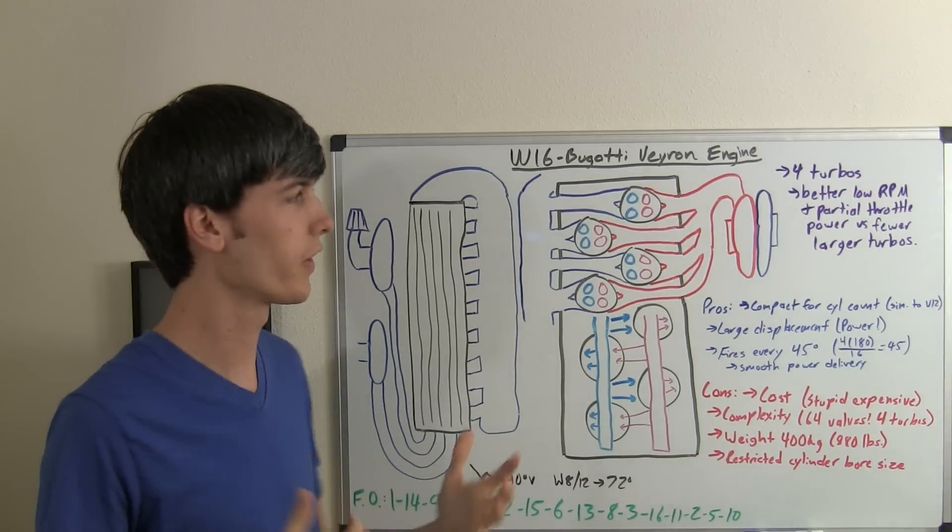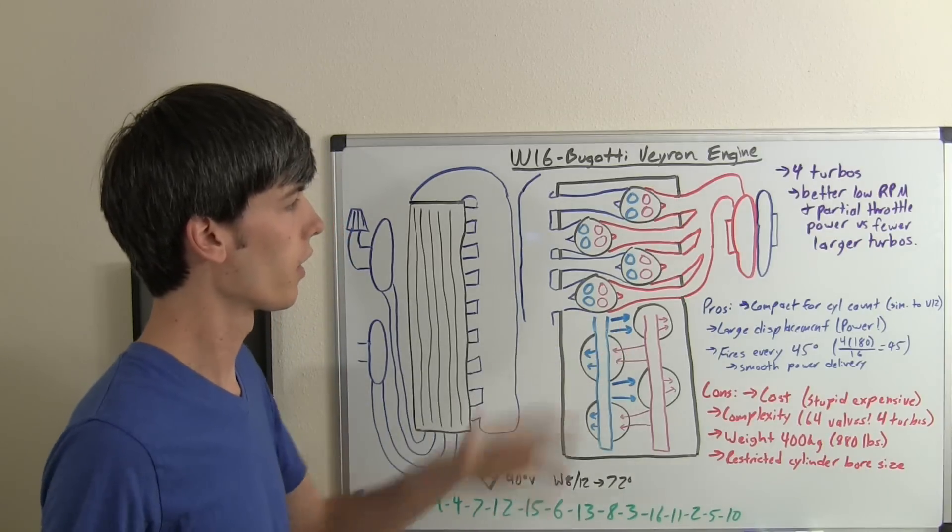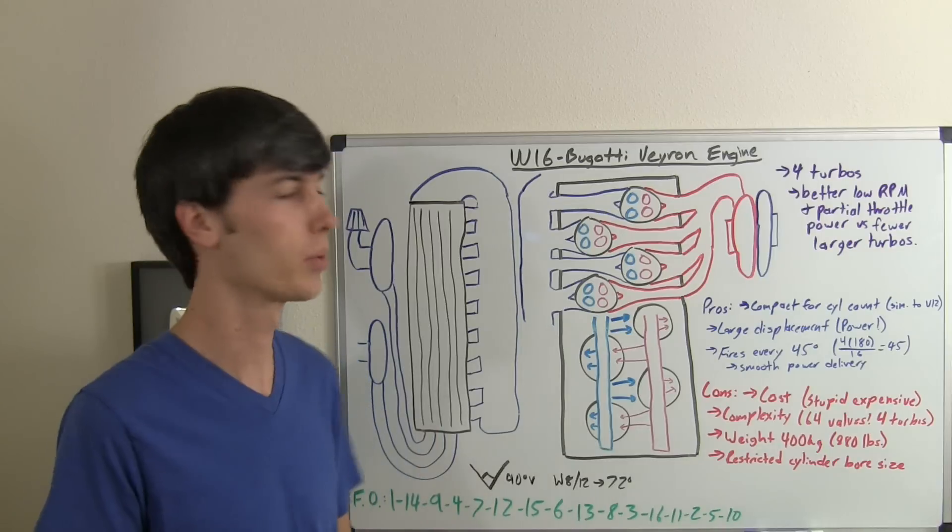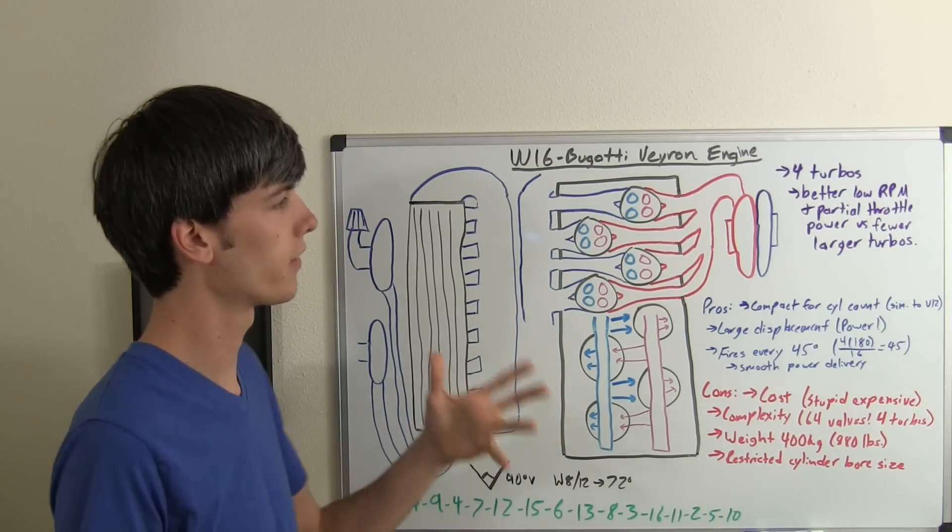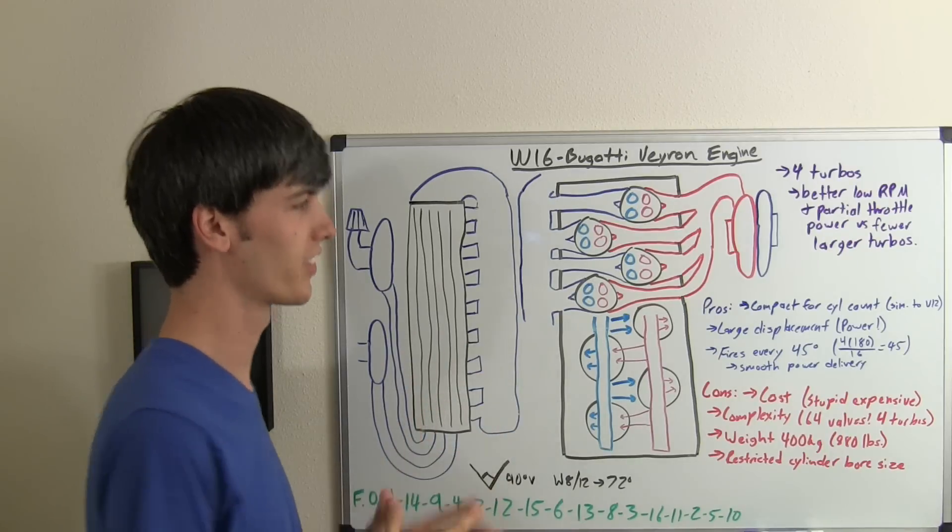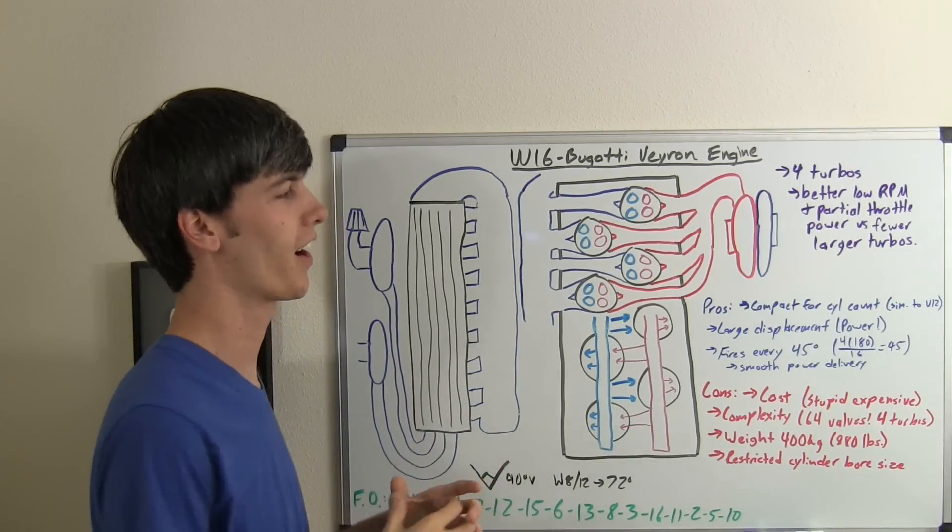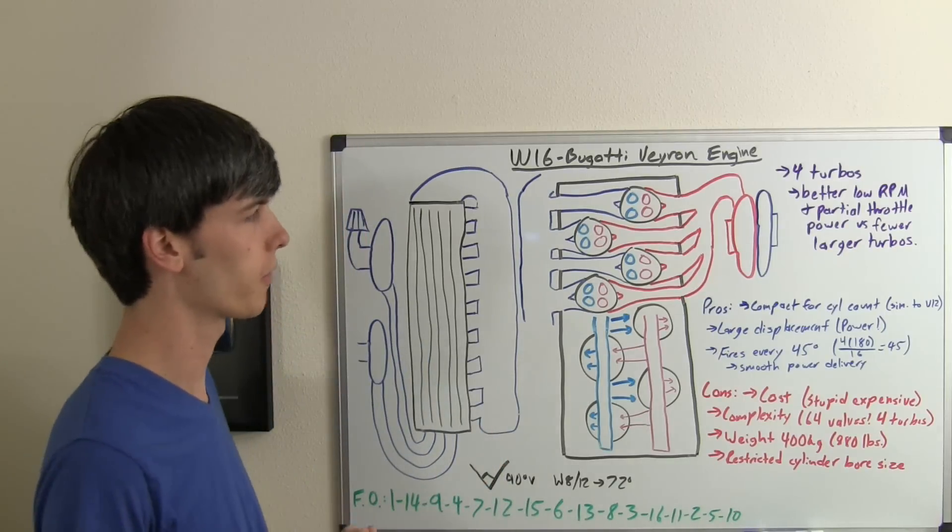So what are the benefits of an engine this massive, and what are some of the drawbacks? Well, the good thing is it's kind of compact for the number of cylinders it has. 16 is a ridiculous number of cylinders, but it's similar in size to a V12. Also, having 16 cylinders, you can have a very large displacement engine. This is an 8-liter engine, so you can create a tremendous amount of power.